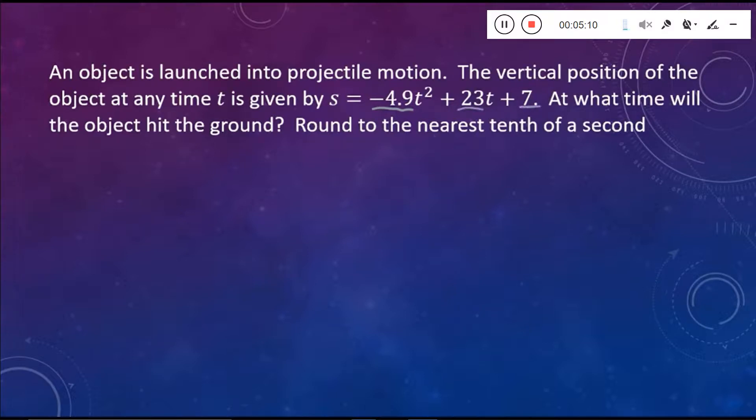Yes, it's not going to be pretty, but nonetheless, we know that it will get us down to a correct answer. So that's what we did here. We took minus b, negative 23, plus or minus the square root of 23 squared minus 4 times negative 4.9 times 7. And that's all divided by 2 times negative 4.9.